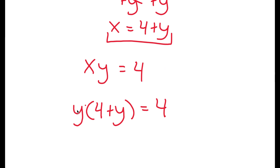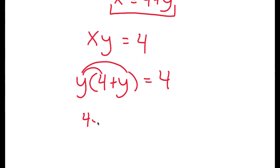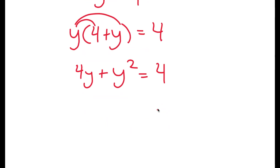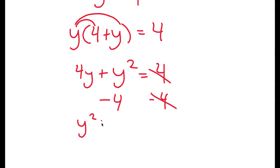Now from here, to multiply these two, I'm going to distribute the y. y times 4 is 4y and y times y is y squared. So I get 4y plus y squared equals 4. I'm going to rewrite this by subtracting 4 on both sides, so now I get y squared plus 4y minus 4 equals 0.